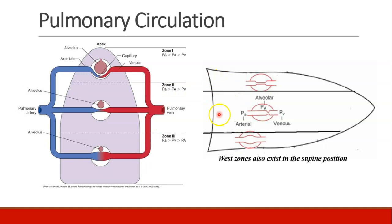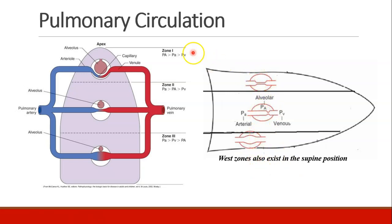This diagram reminds us that this is all about gravity, and we're looking at an upright patient here. But in anesthesia, most of our patients are not upright — they are lying down. If this is the patient's chest and this is the patient's back, we have the same three West zones based on gravity, looking at when alveolar pressure becomes greater than venous pressure, greater than arterial pressure, and then lower than both. The same would apply in the lateral position.